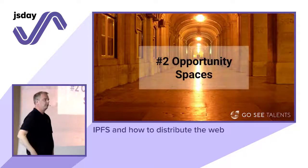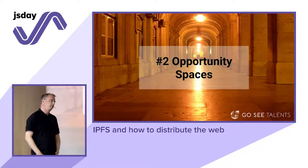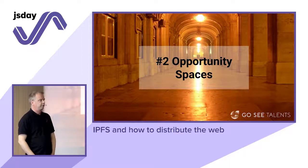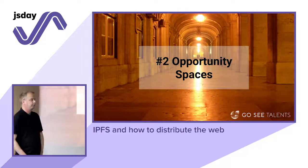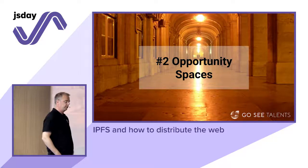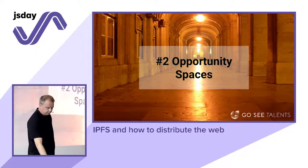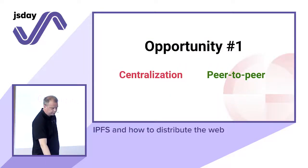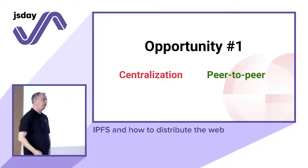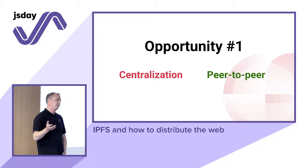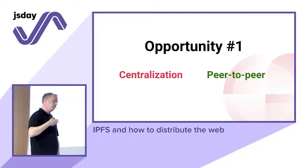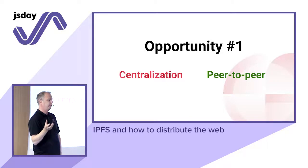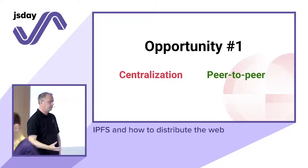Now we look at two opportunity spaces — reasons for why this could be a good thing. The first one is about centralization versus peer-to-peer, and the other one is about the volatility of content, that content changes over time on the internet today. So HTTP — it's a bit funny because when the web started out, we thought it was like a decentralized thing, right? But now it seems to be becoming a centralized thing, because all commercial interests are in centralized places. So it could be decentralized, but it's really not.